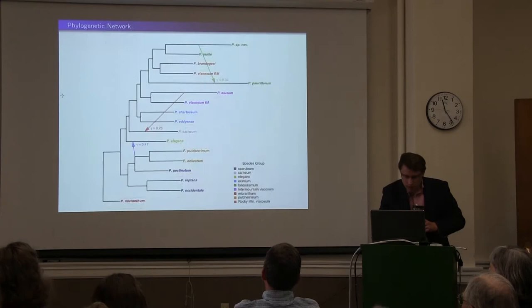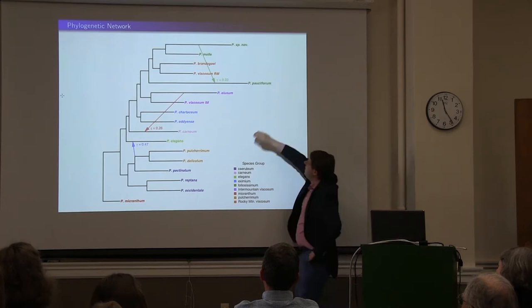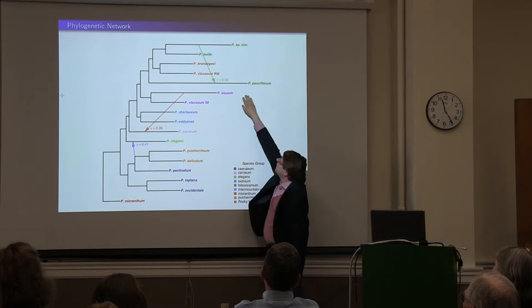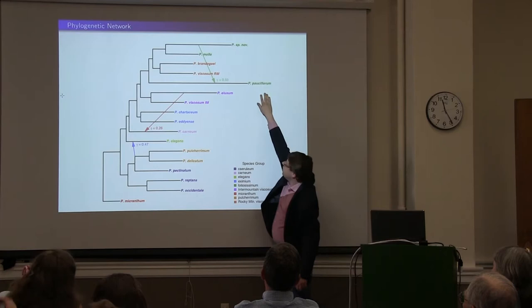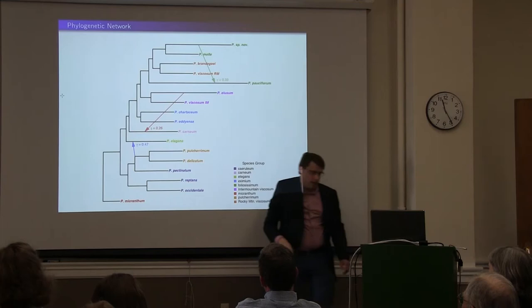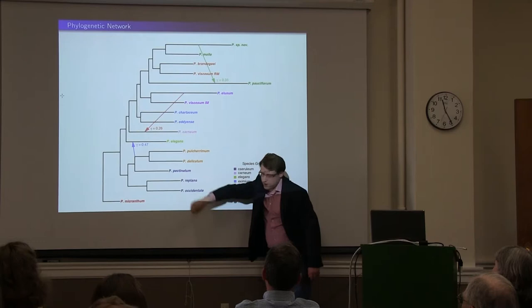Explicitly testing for reticulate evolution in a subset of 17 species, we do see at least three instances of reticulate evolution in the history of Polemonium. These arrows indicate: we have exchange of 33% of the genome from this undescribed species to Polemonium pauciflorum; 26% of the genome from the elusum lineage to carneum; and 47% of the genome from the pulcherrimum clade to elegans.